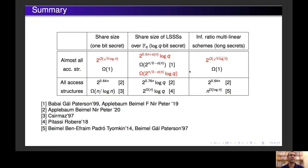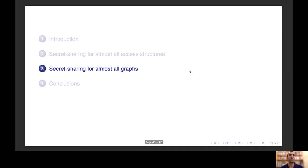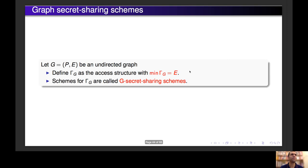This is a summary of the upper bounds and lower bounds for almost all access structures and all access structures. Now we go to the results on graph secret sharing schemes. Graph secret sharing schemes are schemes in which the minimal authorized subsets are of size 2. Since subsets of size 2 define a graph, the family of minimal authorized subsets defines a graph and so we talk about graph secret sharing schemes. Let G be an undirected graph; we define Γ_G as the access structure in which the minimal authorized subsets are the edges of the graph. Schemes realizing Γ_G are called G-secret sharing schemes.